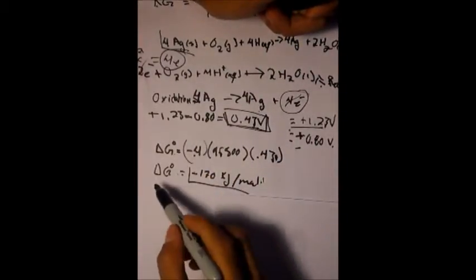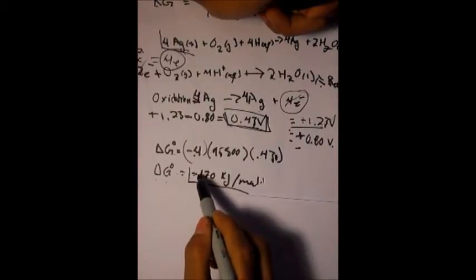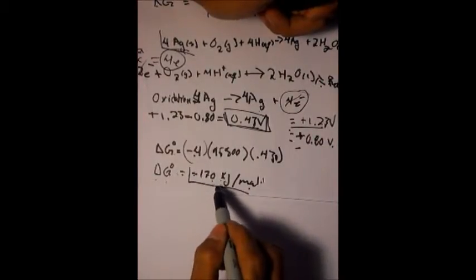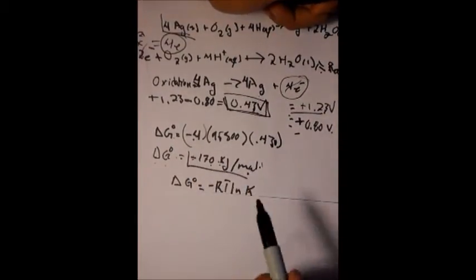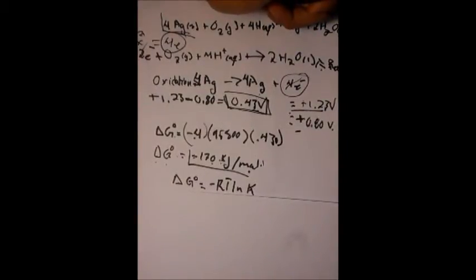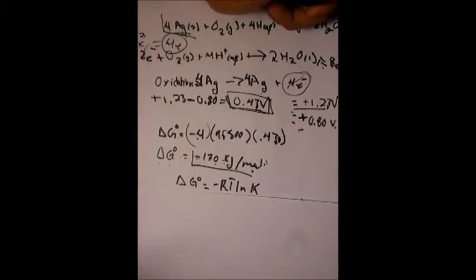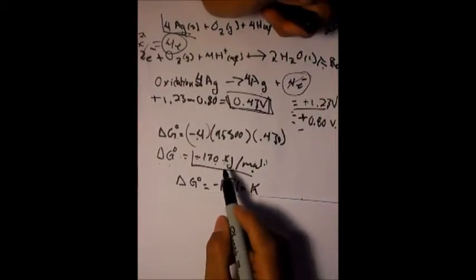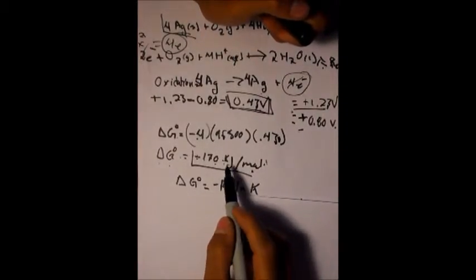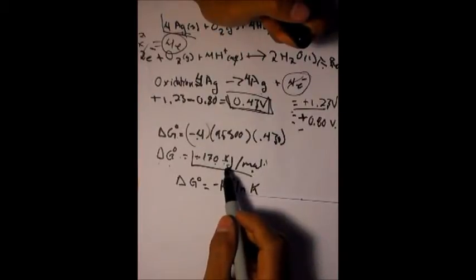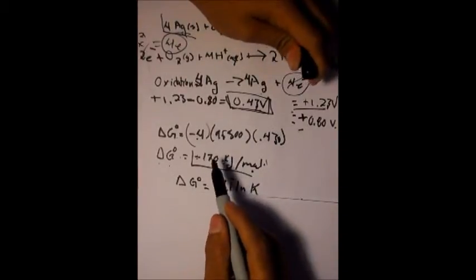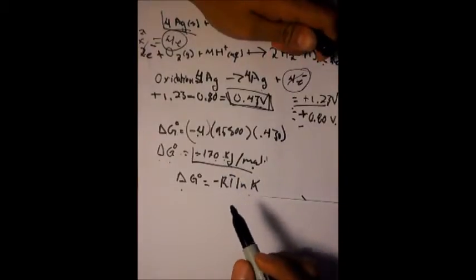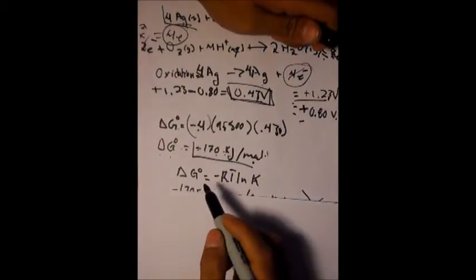You will multiply and you get Delta G which is negative 170 kilojoules per mole. Never forget the kilojoules per mole. Some questions might ask you to keep it in joules or kilojoules. If the question asks you to keep it in joules, you multiply by a thousand and just add three zeros. But it's okay on this problem to leave it in kilojoules because it's not asking.